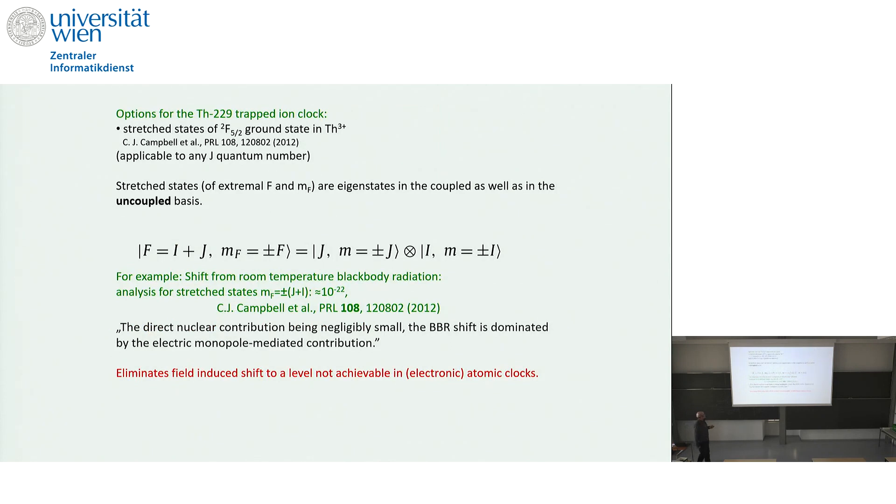Then there was a more precise, more quantitative analysis by André Derevianko, Alex Kuzmich, Corey Campbell. They analyzed what type of states would be suitable. They proposed stretched states in the coupled system in thorium 3+. Stretched state is one where the angular momentum of the nucleus and of the electron are aligned. And these states can be written - they are eigenstates of both the hyperfine coupled as well as uncoupled bases. And they can be written in a way that the electronic and nuclear degrees of freedom uncouple. And then they analyzed that for such a state, the shift would be even smaller than we in our simple estimate - another three orders of magnitude gain.